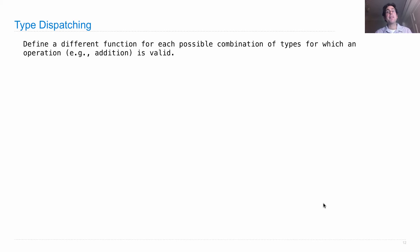Define a different function for each possible combination of types for which an operation is valid, such as addition.